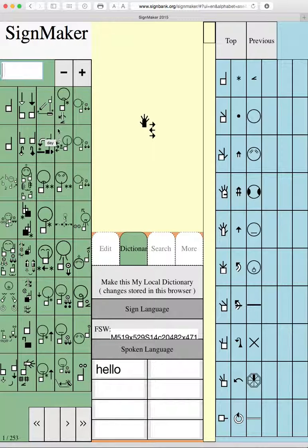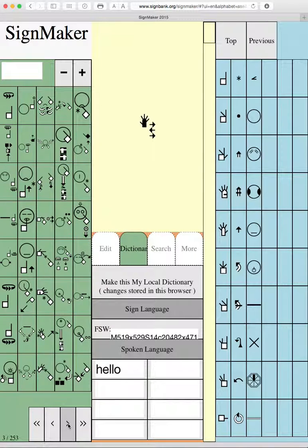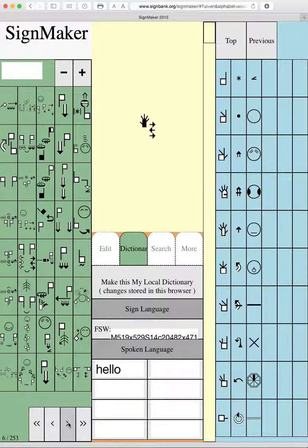How do I leaf through the dictionary? There are arrows at the bottom of the screen, the bottom of the green dictionary. Click on the small arrow and keep clicking and as you can see you're leafing through the dictionary one sign after the other.